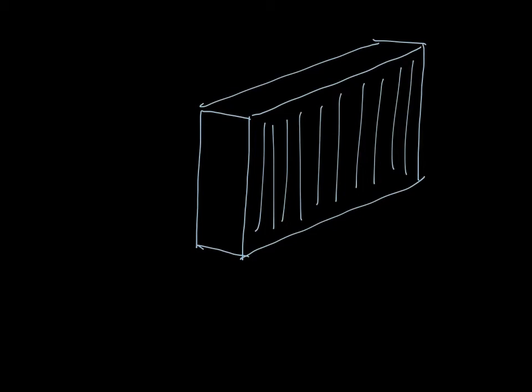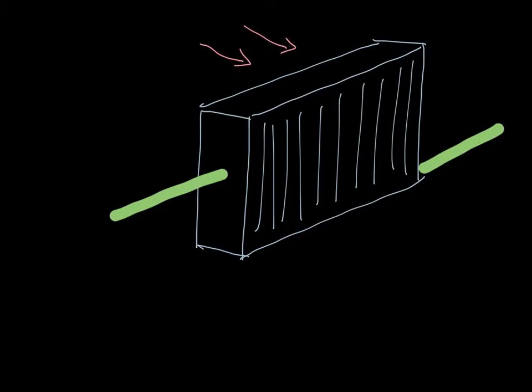Okay, in the refrigeration cycle, liquid refrigerant travels through the evaporator. So these green lines will represent the refrigerant piping. The fins of the evaporator absorb heat from the passing air stream. So these red arrows represent air.